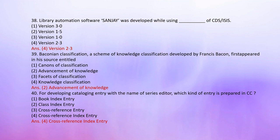Number 40: For developing a cataloging entry with the name of a series editor, which kind of entry is prepared in CC? 1. Book index entry, 2. Class index entry, 3. Cross-reference entry, 4. Cross-reference index entry. The correct answer is 4: Cross-reference index entry.